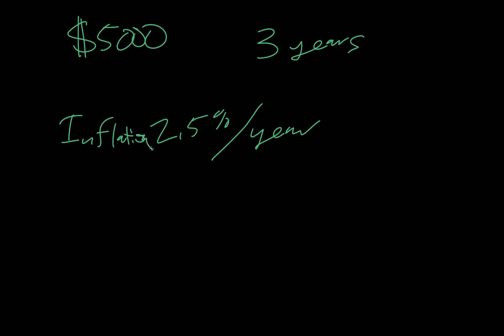Okay, example 15. Georgia would like to purchase a painting that is currently worth $5,000. She makes monthly deposits into an investment account so that she can purchase the painting in 3 years. If inflation averages 2.5% per year, calculate the value of the painting indexed for inflation for 3 years.